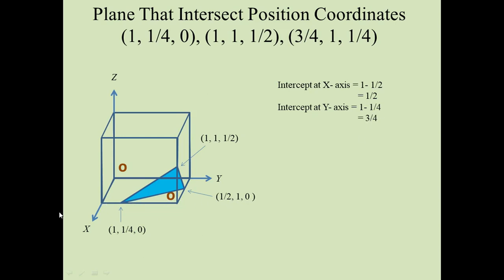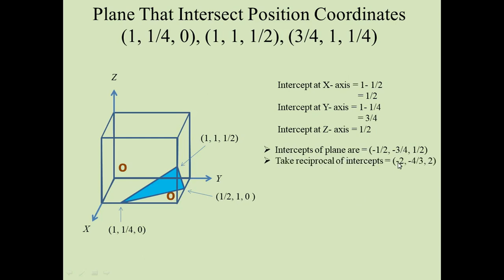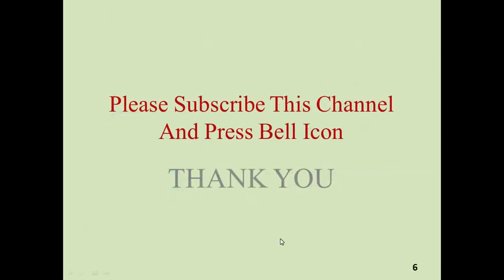We will put −3/4 because the intercept is in the negative y-axis direction. The intercept along the z-axis is 1/2, since for this position coordinate the z value is 1/2, and z is positive for both origins. So the intercepts of the plane are −1/2, −3/4, and 1/2. Taking the reciprocal we get −2, −4/3, and 2. Removing fractions we get −6, −4, and 4, so the Miller indices are (6̄, 4̄, 4), where the bar shows the negative sign. Please subscribe to this channel and press the bell icon to be updated with our future videos.